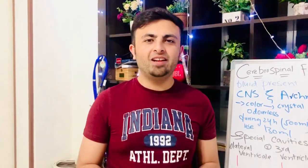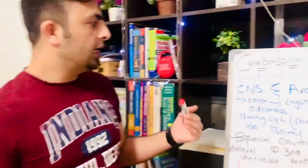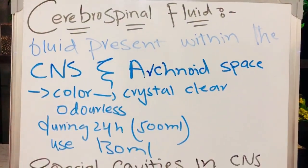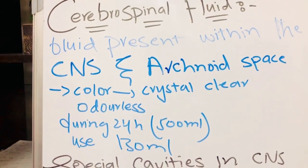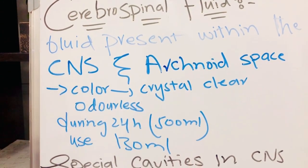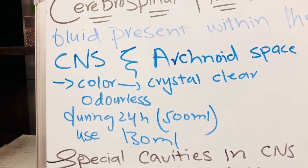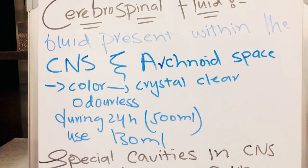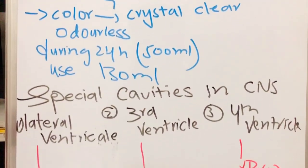Cerebrospinal fluid is the fluid within the central nervous system in the subarachnoid space. The color of cerebrospinal fluid is crystal clear — it does not have any color and it is odorless. The production per day is 500 ml and the body usage is 130 ml per day.